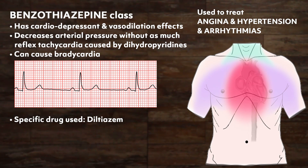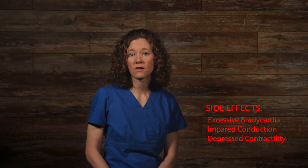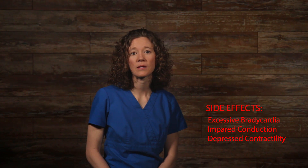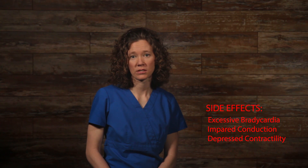Benzothiazepines are another non-dihydropyridine calcium channel blocker that has cardiodepressant and vasodilation effects. They decrease arterial pressure without as much reflex tachycardia as caused by the dihydropyridines, but can also cause bradycardia as a side effect. The specific drug in this class is diltiazem, which is in between verapamil and dihydropyridines in its selectivity for vascular calcium channels. Side effects are similar to the phenylalkylamine class: excessive bradycardia, impaired electrical conduction, and depressed contractility.